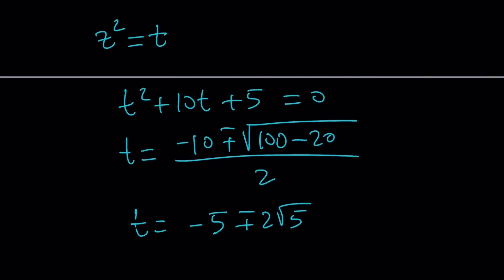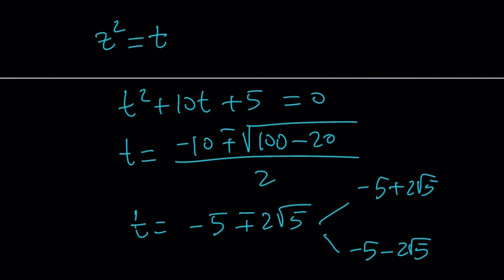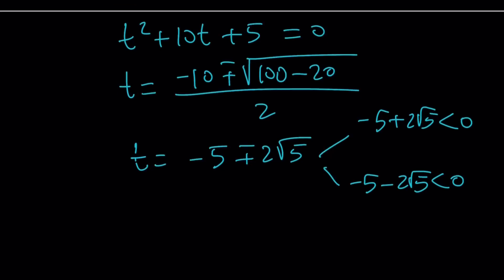Obviously, if you think about these, -5 + 2√5 and -5 - 2√5 are both negative. Because if you square 2√5, you get 20. If you square -5, you get 25. Make sense? So they're both negative. What that means is that you're not going to get real solutions. They're going to be complex. Because remember, t is equal to z^2. So you can basically proceed with this, which is going to take a little while.